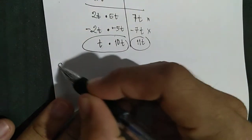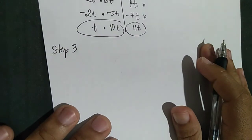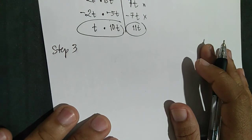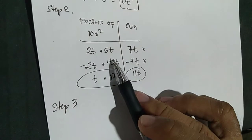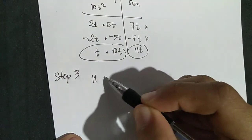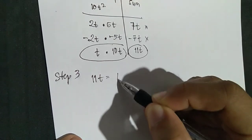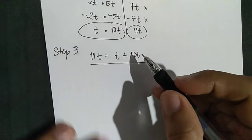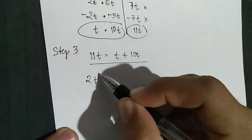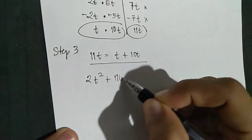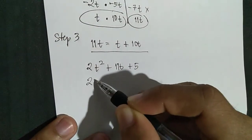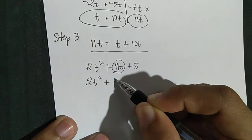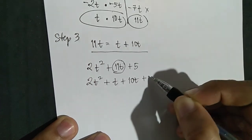Step 3: rewrite the trinomial as a four-term expression by replacing the middle term with the sum of the factors. From Step 2, 11T equals T plus 10T. Therefore, 2T squared plus 11T plus 5 becomes 2T squared plus T plus 10T plus 5.